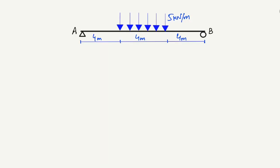Here we see the simply supported beam with two supports: one is a hinge support represented by A and one is a roller support represented by B. There is a uniformly distributed load of 5 kN per meter acting over a length of 4 meters. The total length of the beam is 4 + 4 + 4 = 12 meters, where the load is only acting at the mid portion of the beam over 4 meters.